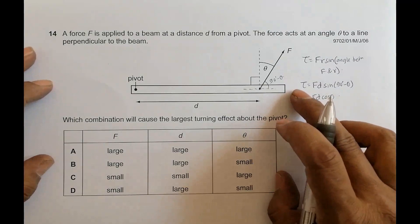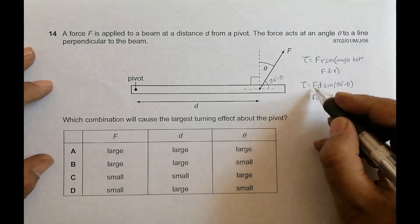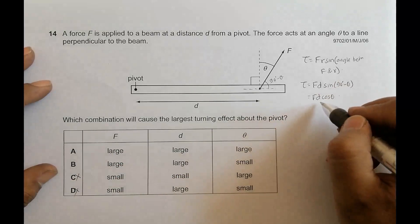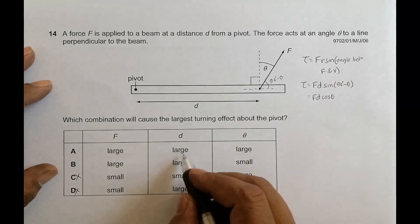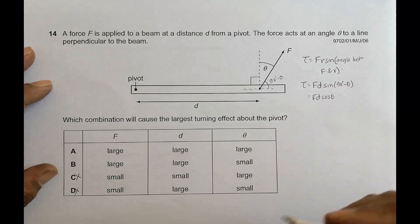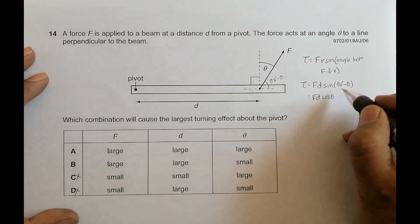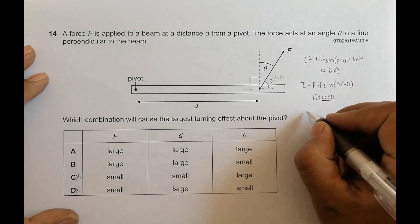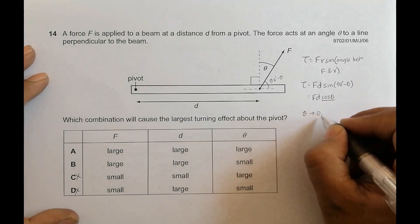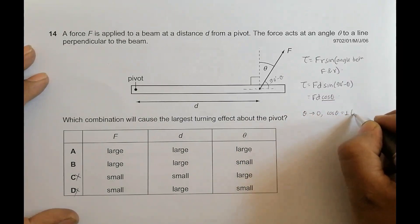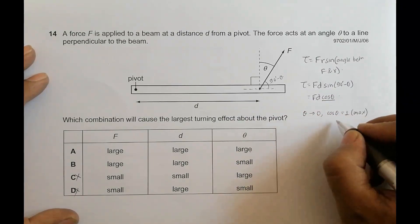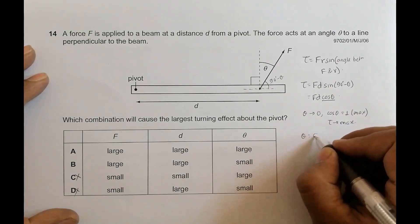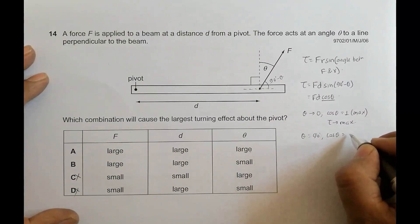To have a larger torque, I must have a large force — so large F is required. I must also have large D, so both of those factors qualify. Then, for cos(θ): if theta equals zero, cos(θ) equals one, which is the maximum value, making tau maximum. If theta equals 90°, cos(θ) equals zero, making tau minimum.